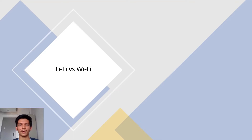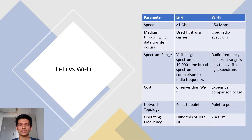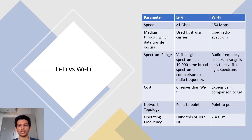Looking at how Li-Fi compares to Wi-Fi: the visible speed of Li-Fi is greater than 1 Gbps, far greater than Wi-Fi's 150 Mbps. Li-Fi uses light as its medium while Wi-Fi uses radio spectrum. The spectrum range of visible light is far greater than radio frequency. Li-Fi is cheaper than Wi-Fi as it requires only four main parts. Both use point-to-point network topology. Li-Fi operates at hundreds of terahertz whereas Wi-Fi operates at 2.4 GHz, with 5 GHz now also used.